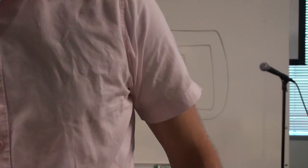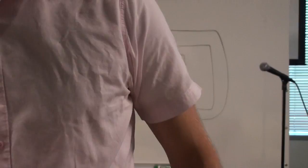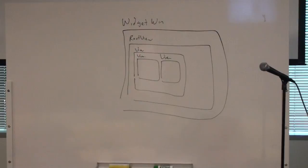So Ian's just going to turn the camera around. I've just drawn some boxes here. The outermost box is the widget win. When you're typically writing Windows code, you have your HWND and you might have child HWNDs. Here the widget win is the HWND. Inside that, we have a single view, which is the root view.